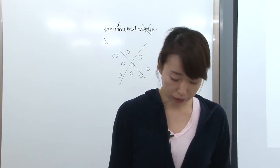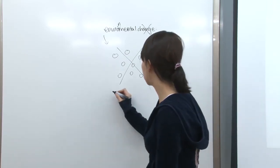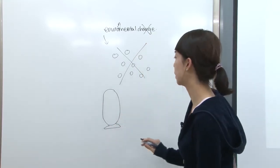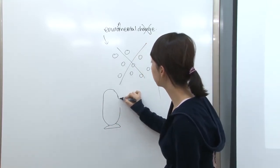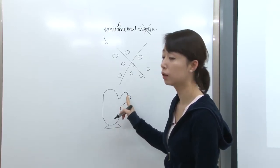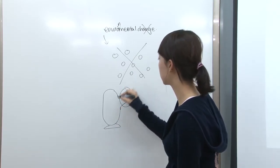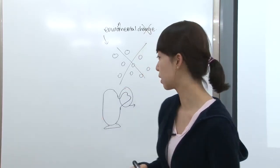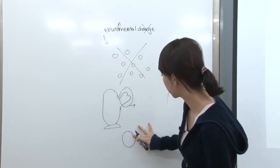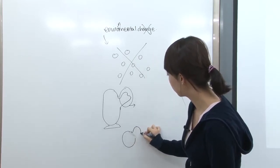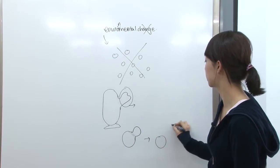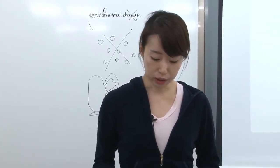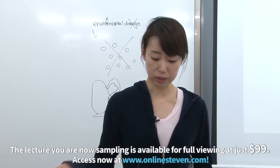Budding is when a structure buds out of the body. For a hydra — a cnidarian — structures come out of the body and each becomes a separate individual. The same occurs in yeast: a structure buds out and becomes a daughter cell, separate from the mother cell.